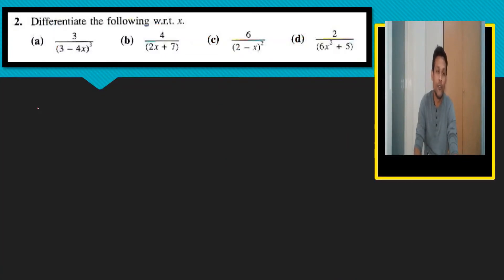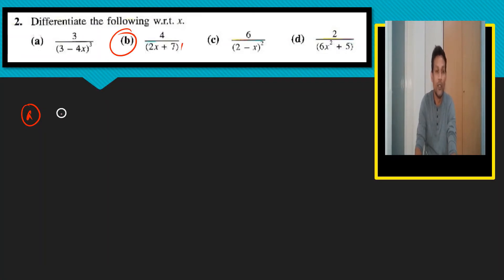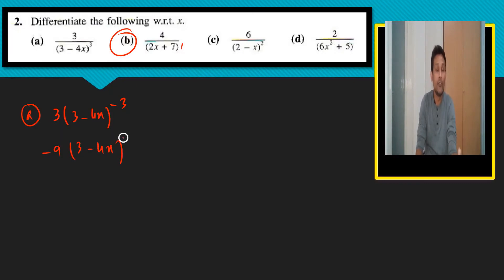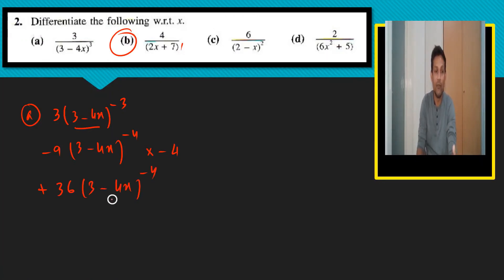For question 2, part a — this is an important big question in the exam. The power here is minus 3, so (3 minus 4x) to the power minus 3. Using the power law: minus 3 becomes the coefficient, power reduces by one to minus 4, multiplied by the inner differentiation of (3 minus 4x), which is minus 4. So minus 3 times minus 4 is positive 36, giving 36 divided by (3 minus 4x) to the power 4.